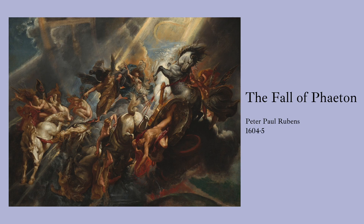In this painting by Peter Paul Rubens, we see the climactic moment of Phaeton's tragic story. Painted around 1604–5, Rubens uses bright colors and contrasting light to represent Zeus's lightning bolts. Helios's horses and chariot are tumbling out of the sky, with some of the gods and goddesses of the seasons trying to stop them from crashing into the earth.